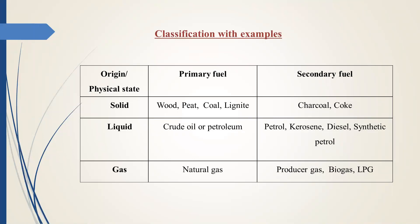Crude oil or petroleum is the primary fuel in the form of liquid. The word 'petroleum' is a Greek word derived from two words: petra and oleum. Petra means rock and oleum means oil, so it is the oil derived from rock, called crude oil. Petrol, kerosene, diesel, and synthetic fuel are secondary fuels which are liquid in nature. Natural gas is the primary fuel in gas form, and producer gas, biogas, and LPG are secondary fuels which are gaseous in nature. Primary fuel is naturally occurring, and secondary fuel is artificially prepared from primary fuel.